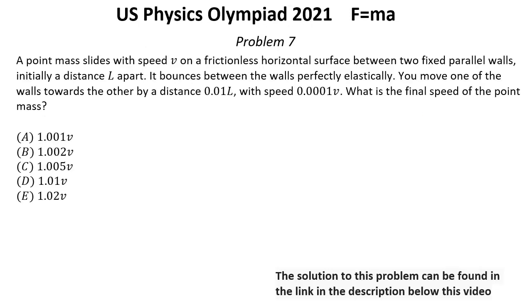Problem number 7. A point mass slides with speed V on a frictionless horizontal surface between two fixed parallel walls, initially a distance L apart. It bounces between the walls perfectly elastically. You move one of the walls toward the other by a distance 0.01L with speed 0.0001V. What is the final speed of the point mass?